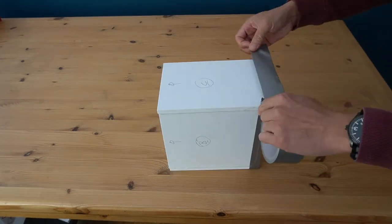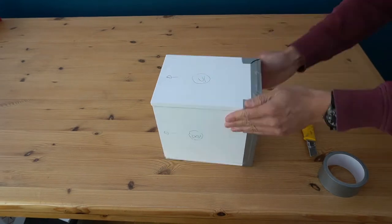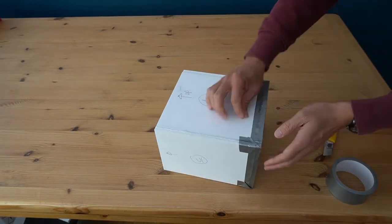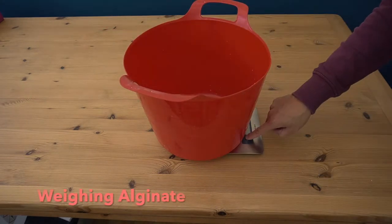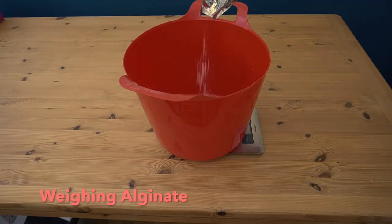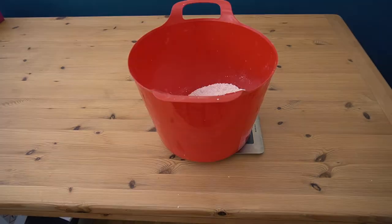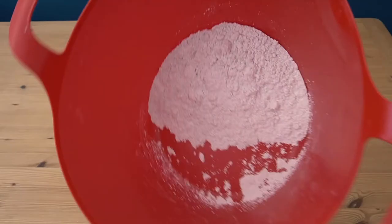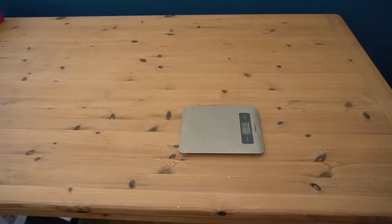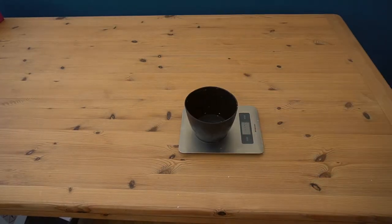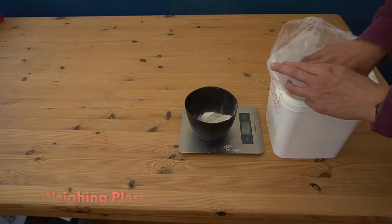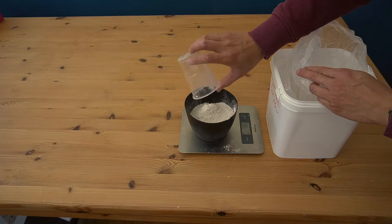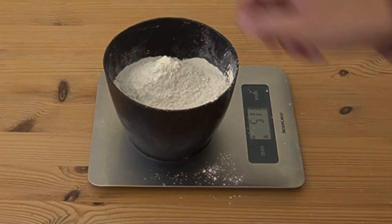Now with the box complete, we can weigh the materials, starting off with the alginate. For this instance, I have used 400 grams of alginate and we'll later mix it with 900 milliliters of water. After the alginate, we need to weigh up the plaster. In this instance we need 1 kilo, but we'll split this quantity over two smaller bowls.